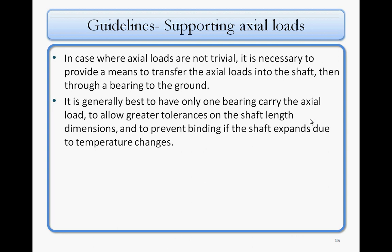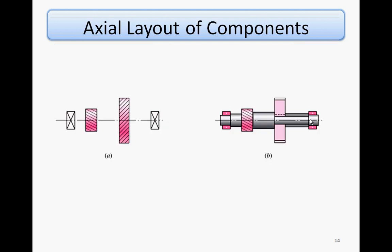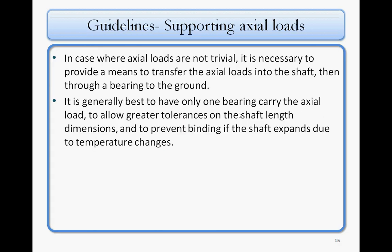In cases where axial load is not trivial — for example, if you're using a helical gear, there will be an axial loading called thrust load — you need to take care of that with a thrust bearing on one side of the shaft to carry the load to the ground. The load goes through the shaft, to the bearing, through the housing, and then to the ground.